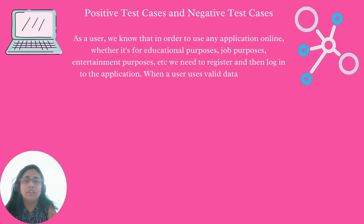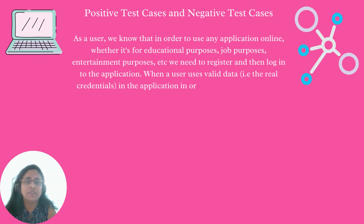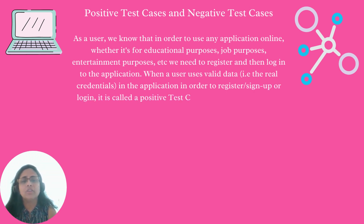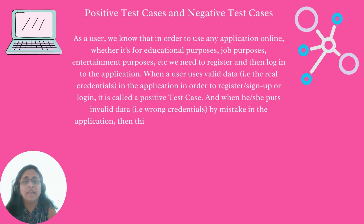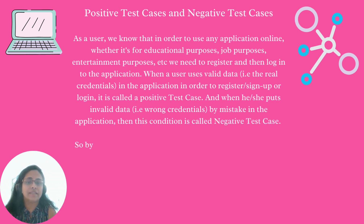When a user uses valid data — that is the credentials, the real credentials in the application — in order to register, sign up, or log in, it is called a positive test case. And when he or she puts invalid data, that is the wrong credentials by mistake in the application, then this condition is called negative test cases.